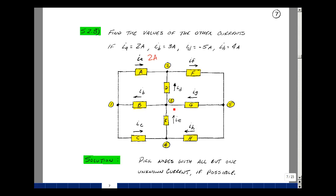So I sub A is 2 amps, I sub B is 3 amps, I sub D here is minus 5 amps, and I sub H is 4 amps. So I've got that here.